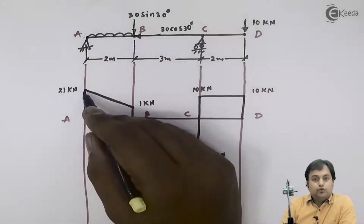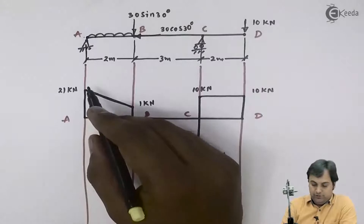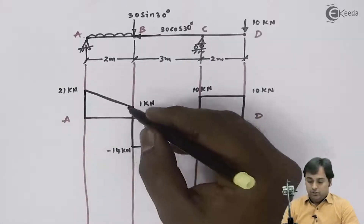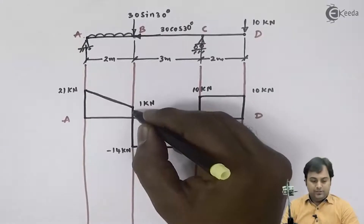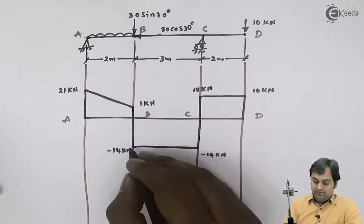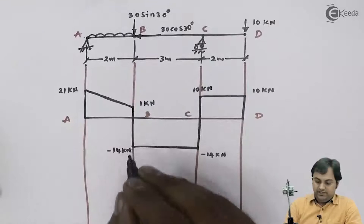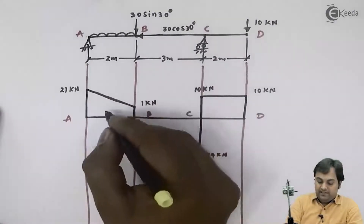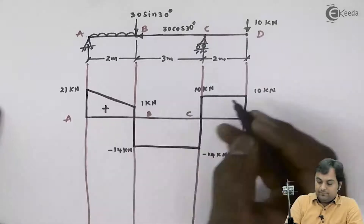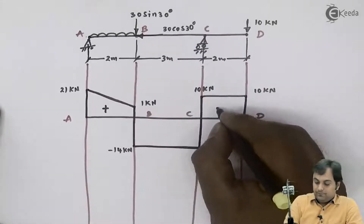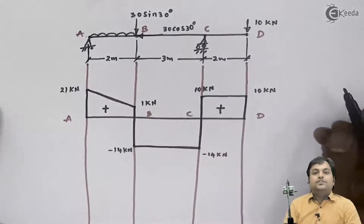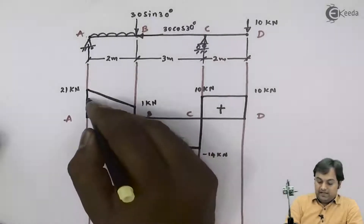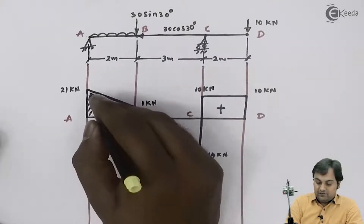SF at point A was 21 kilonewton positive. SF at point B had two values: the first is 1 kilonewton positive and the second is minus 14 kilonewton, a negative value. The values plotted above the line are positive and the values below the line are negative. Here I have drawn the shear force diagram for the given beam.